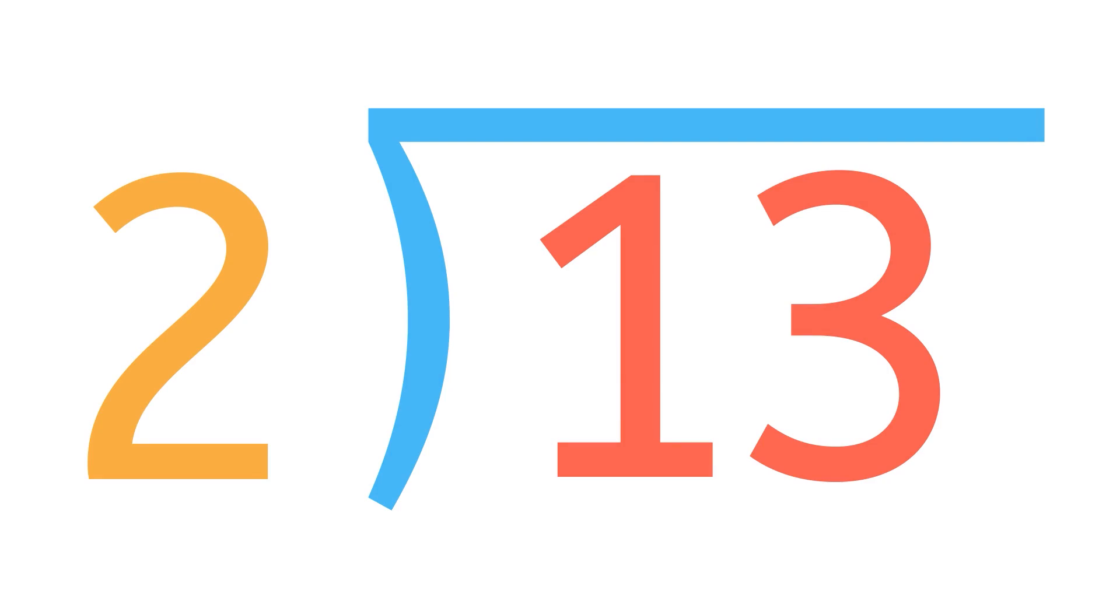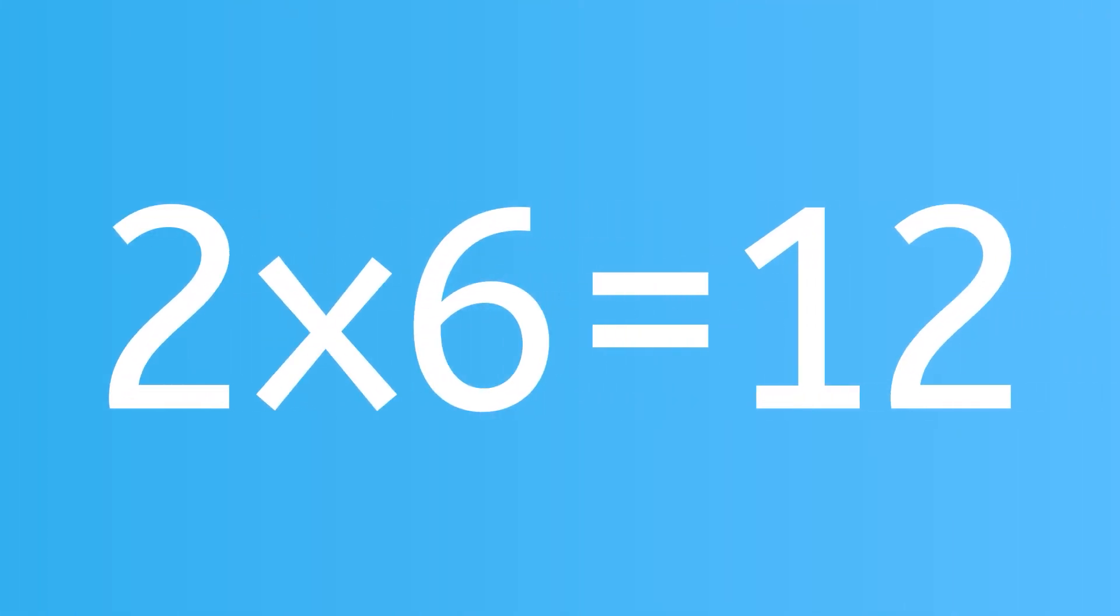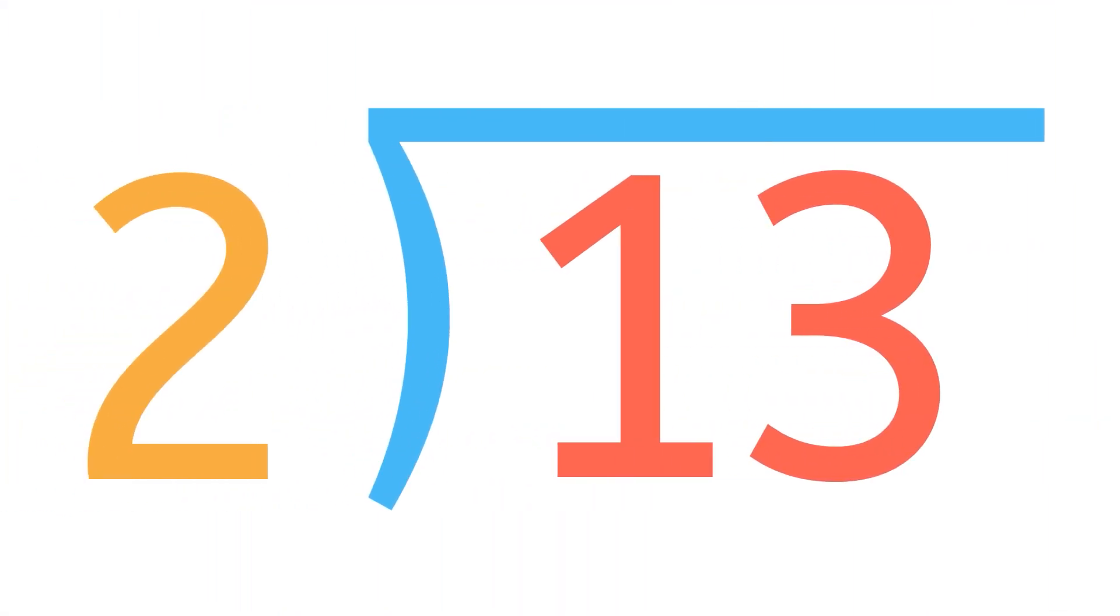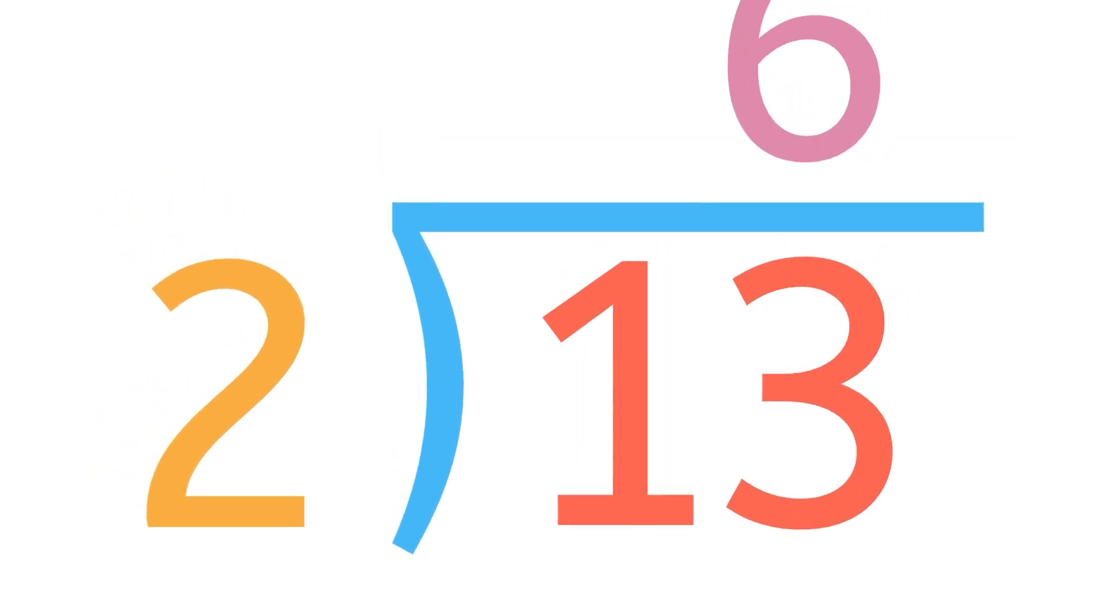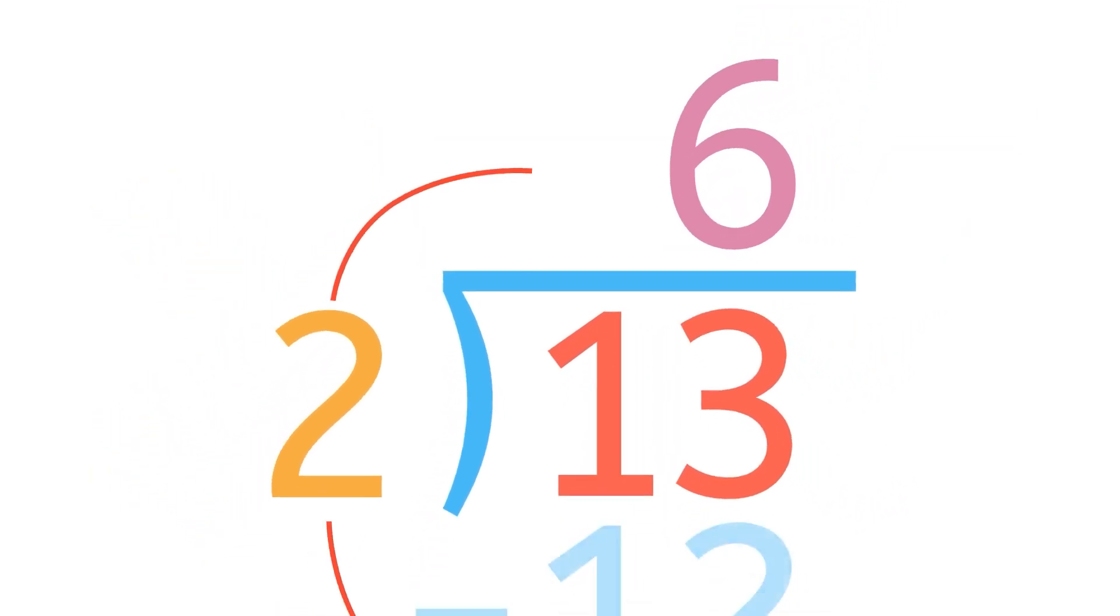This one, 13 divided by 2, is a little harder. You know that 2 times 6 is equal to 12, and 2 times 7 is equal to 14. 13 is 1 more than 12 and 1 less than 14. You might have figured out by now that 2 can go into 13 6 times, since 2 times 6 is equal to 12.